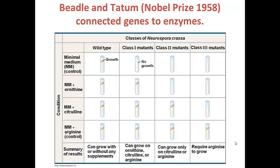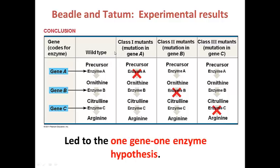They tested whether mutant strains of Neurospora could grow on minimal media lacking specific nutrients, and found that they had to add back a specific nutrient for each strain. The wild type, or normal strain, could grow on media with no additional nutrients, and also on media containing ornithine, citrulline, or arginine. Class 1 mutants could not grow on minimal media but could grow if any of those three nutrients were added back. Class 2 mutants could only grow if citrulline or arginine was added, whereas class 3 mutants could only grow if arginine was added.